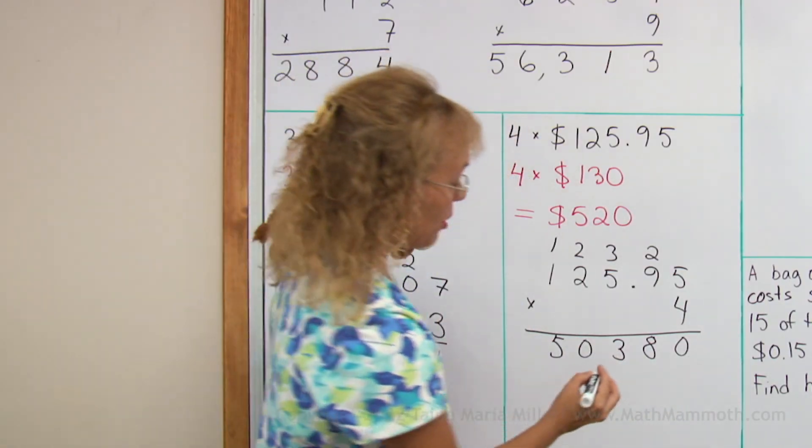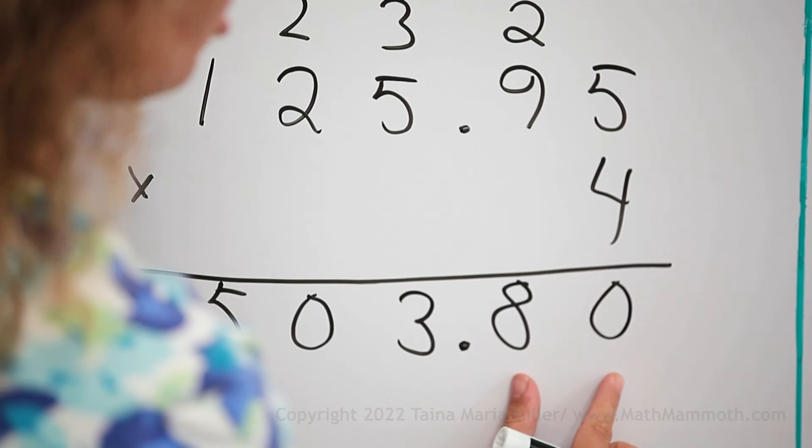Like I said, the decimal point goes right there. So we have two digits for the cents, $503.80.